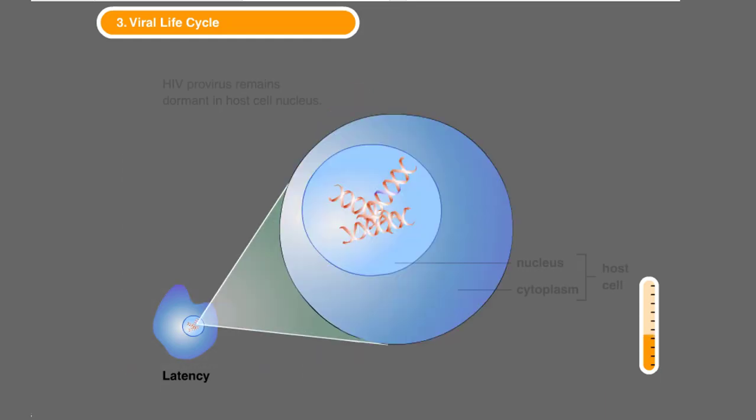Latency: In some types of host cells, cell processes continue as usual after proviral integration, and the infection is said to be latent. These cells do not support viral replication immediately, but remain carriers of the virus for as long as their DNA contains an integrated provirus.